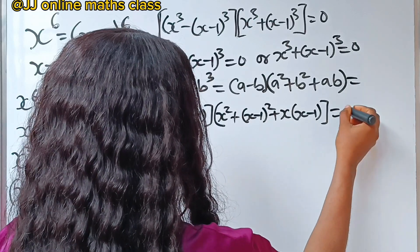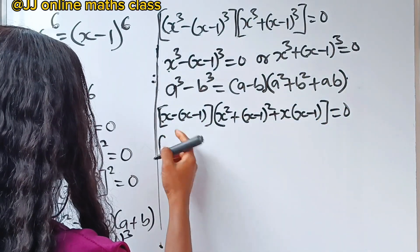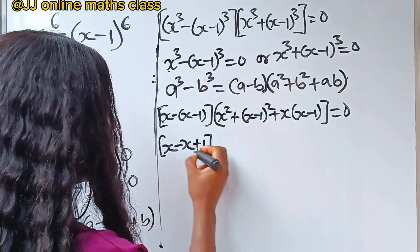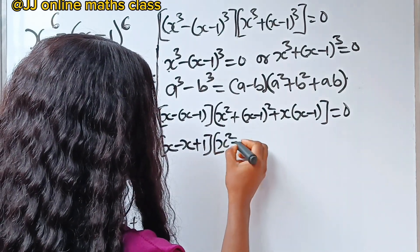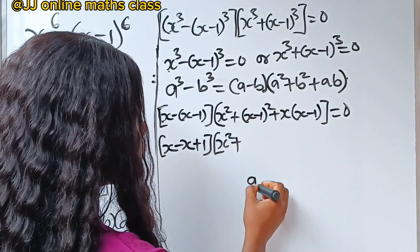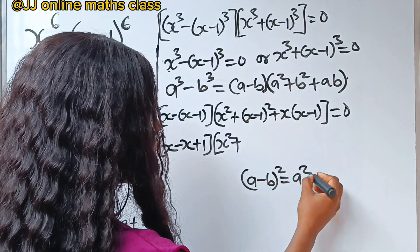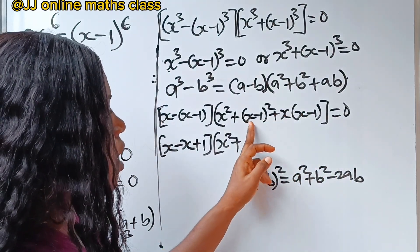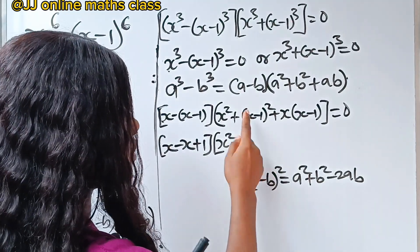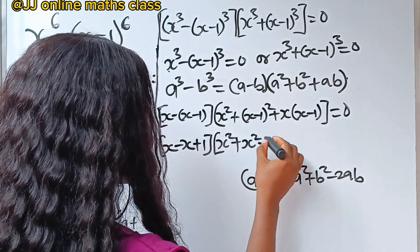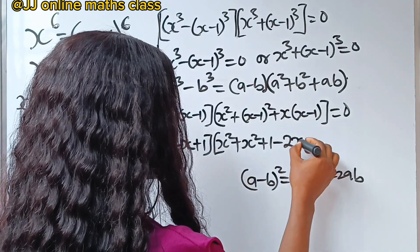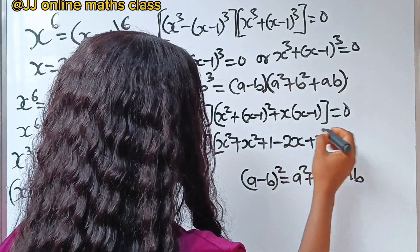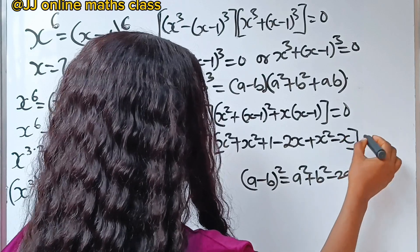Simplifying: x minus x minus one gives us one. Then x minus one squared expands as x squared plus one minus two x. And x times x minus one gives x squared minus x. So inside the bracket we have x squared plus x squared plus one minus two x plus x squared minus x, equal to zero.